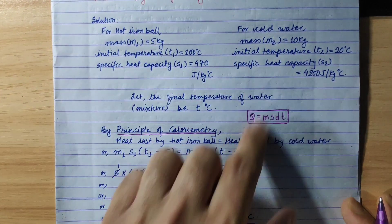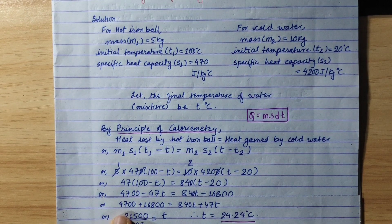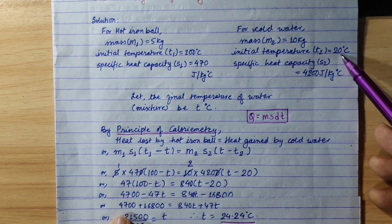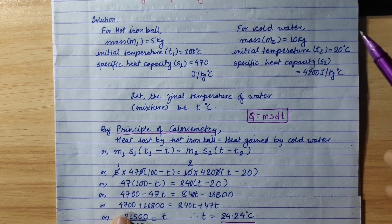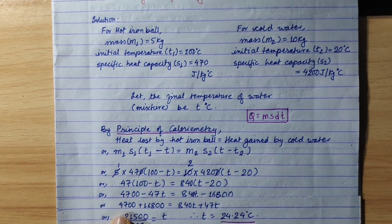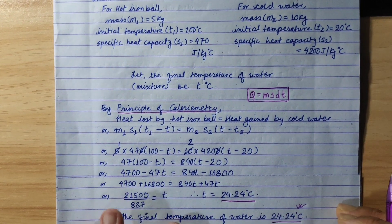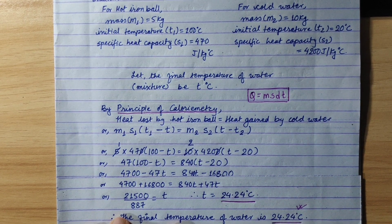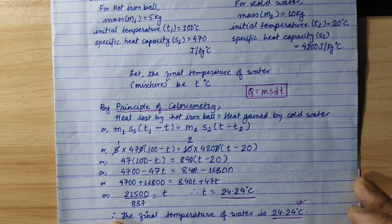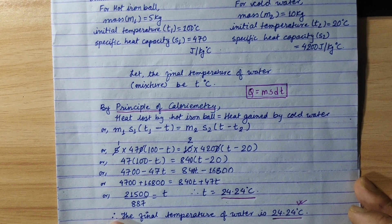The hot iron ball placed in cold water results in a final temperature of 24.24 degree Celsius. Thank you.